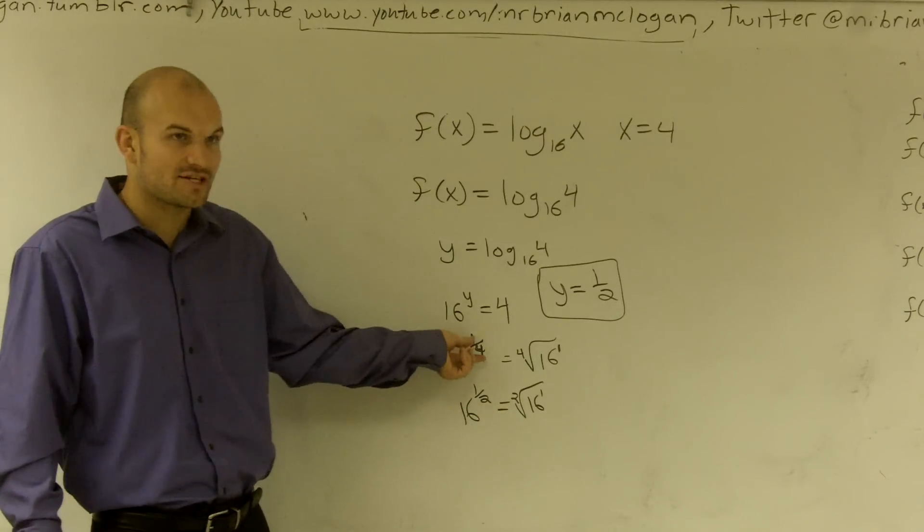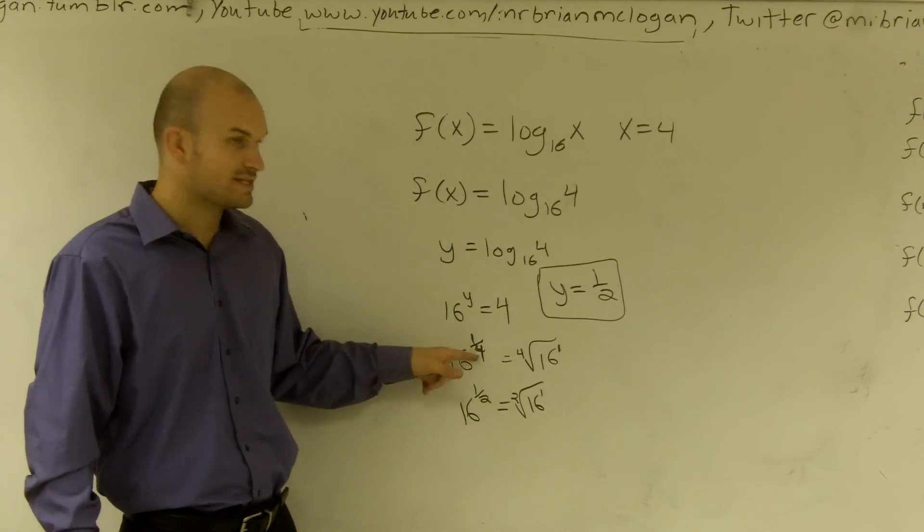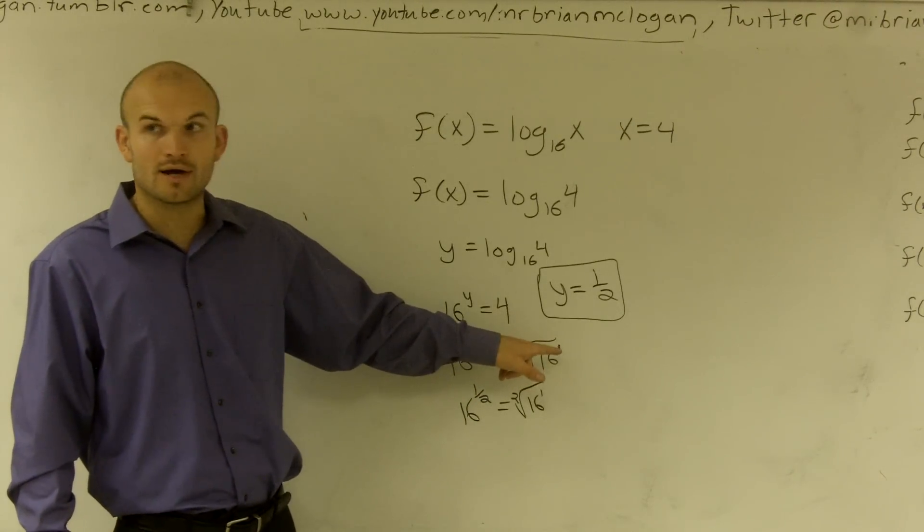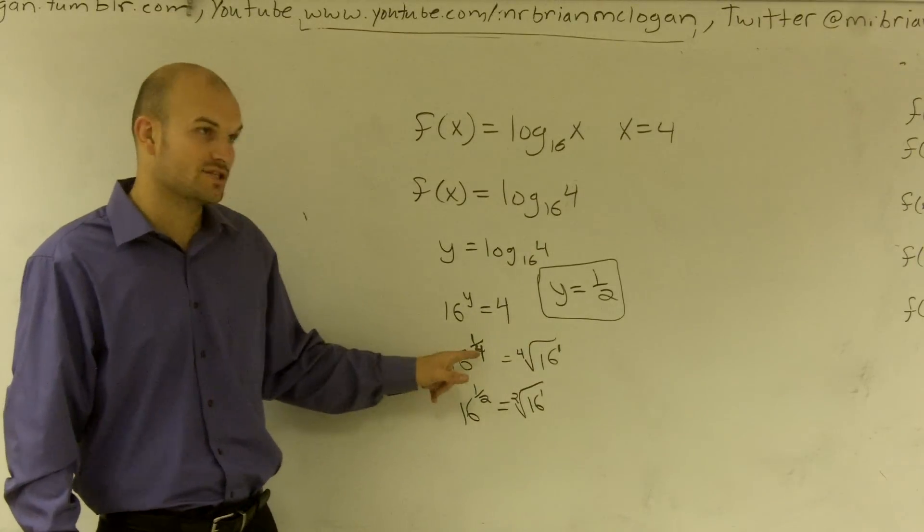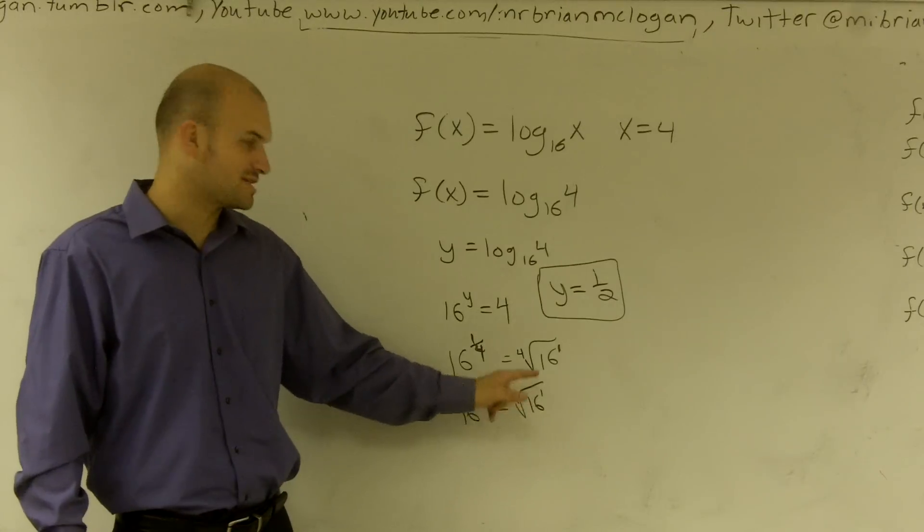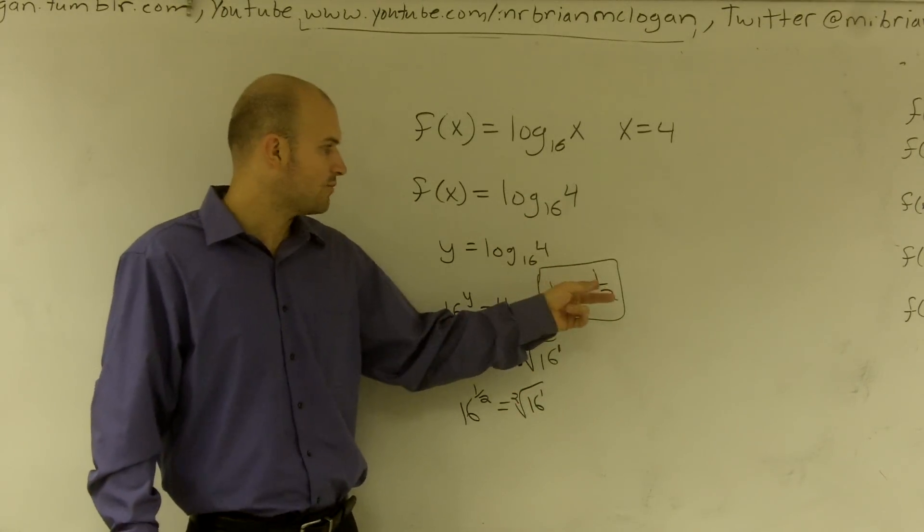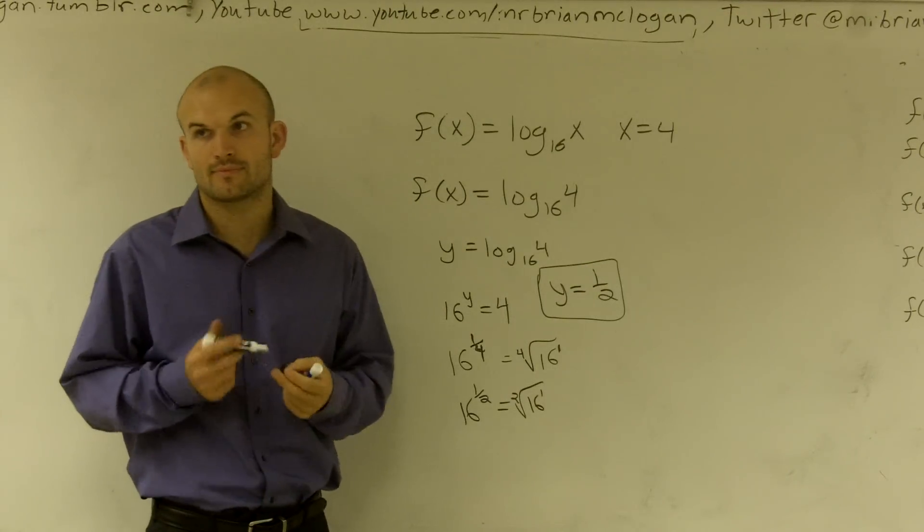The question was, was it 1 fourth or 1 half? A fractional exponent, you can rewrite as a radical, where your denominator is what you're taking the root of, and your numerator is the degree of your radicand. So fourth root of 16 to the first is 16 to the 1 fourth. That is not 4. But the square root of 16 to the first power is 4. So therefore, 16 raised to the 1 half power equals 4.